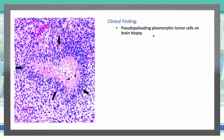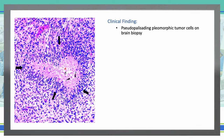Next, pseudopalisading polymorphic tumor cells on brain biopsy — pseudopalisading necrosis in glioblastoma. We see an arrangement of hypercellular tumor nuclei lining up around irregular foci of tumor necrosis, containing pyknotic nuclei. There is also a tumor vessel visible here. This kind of histology — pseudopalisading necrosis — is seen in glioblastoma multiforme.